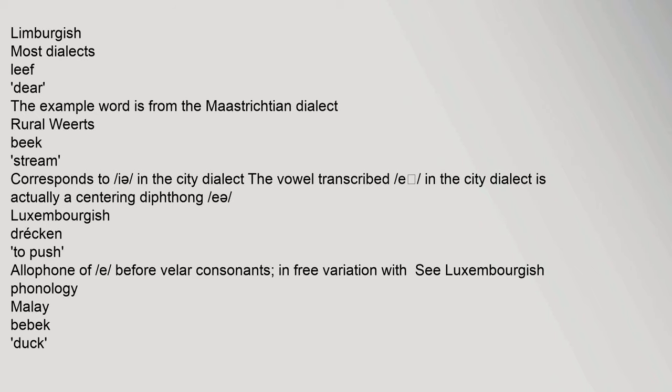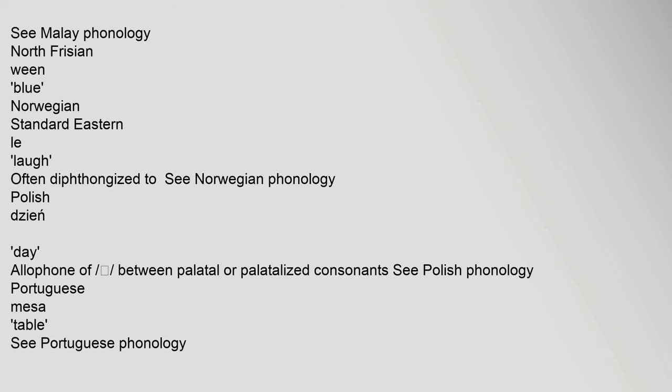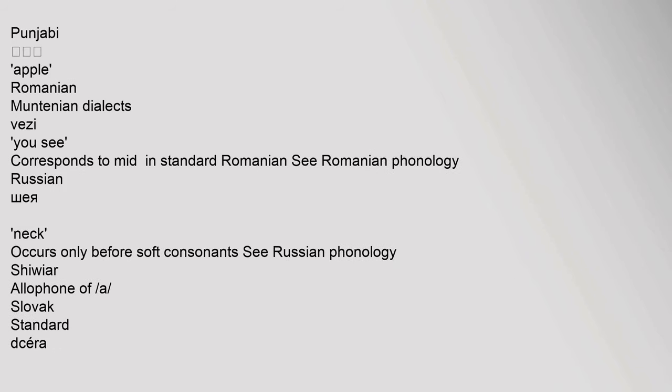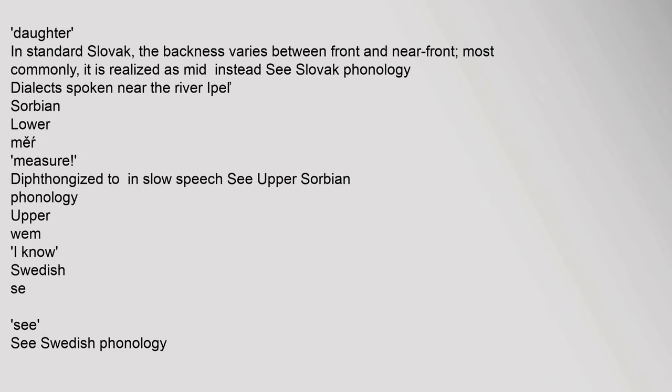Luxemburgish: allophone of 'e' before velar consonants, in free variation — see Luxemburgish phonology. Malay: see Malay phonology. North Frisian. Norwegian standard Eastern: often diphthongized — see Norwegian phonology. Polish. Punjabi. Romanian Muntanian dialects: corresponds to mid in standard Romanian — see Romanian phonology. Russian. Slovak: the backness varies between front and near front; most commonly realized as mid instead — see Slovak phonology. Dialects spoken near the river Ipel. Sorbian Lower. Swedish. Upper Sorbian: diphthongized in slow speech — see Upper Sorbian phonology.